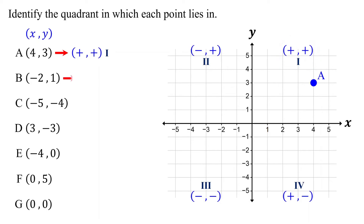For point B, its x-coordinate is negative and its y-coordinate is positive. If the x-coordinate is negative and the y-coordinate is positive, the point lies in quadrant two. Therefore, point B lies in quadrant two. If you plot it, you can also confirm that it is in quadrant two.